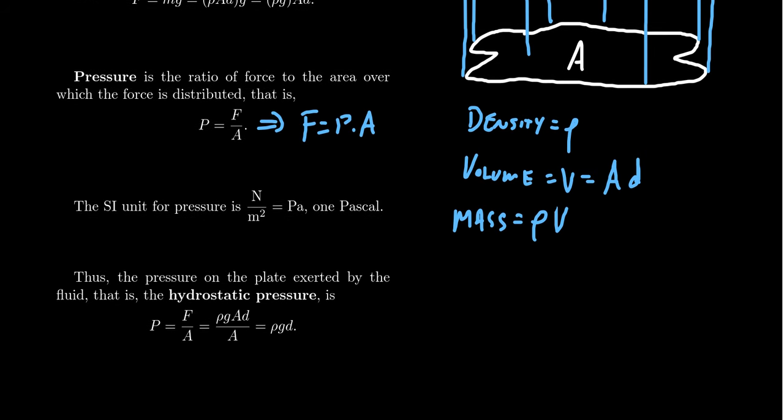So continuing on with this, we see that the pressure on the plate exerted by the fluid, the so-called hydrostatic pressure, using this formula, we get the following. The pressure is equal to force over area. Now, if we take the hydrostatic force observation we had before, we're going to get the density times the acceleration due to gravity times the area times the depth, and then divide that by area. Well, since area is the same thing, you cancel those things out, and you'll just end up with ρgd.